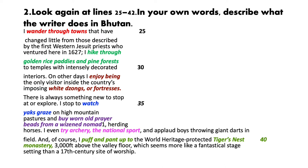The second question asks you to describe what the writer does in Bhutan. Your answer should be taken from lines 25 to 42. This question carries four marks — you have to select any four points and write the answer using descriptive writing techniques.